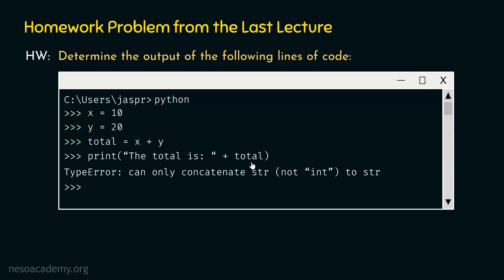We want to concatenate the value 30 with this string. The plus operator can be used for concatenation or addition — here it acts as a concatenation operator because the first operand is a string. The problem is the first operand is a string but the second operand is not a string — it is an integer. This is why Python produces this TypeError: can only concatenate string to string, not integer to string.